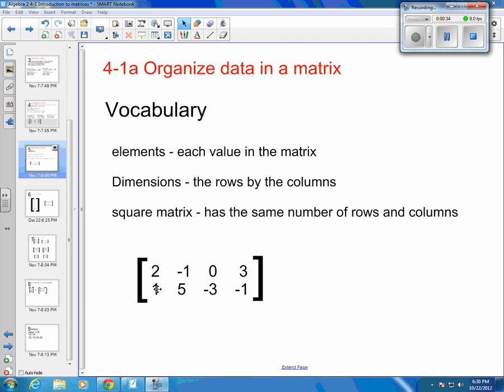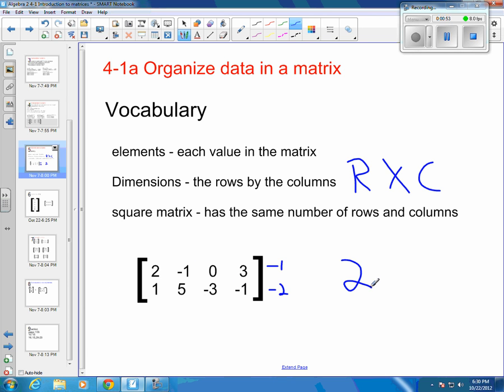Each individual value in the matrix is an element. You give dimensions row by column. So you'd say row and then you put the x for by and then you put your column. So we have 2 rows in this case. 1, 2. So we've got 2 rows and we have 1, 2, 3, 4 columns. So this is a 2 by 4. And no, you may not reduce it. It has to stay 2 by 4 because it physically is 2 rows by 4 columns.